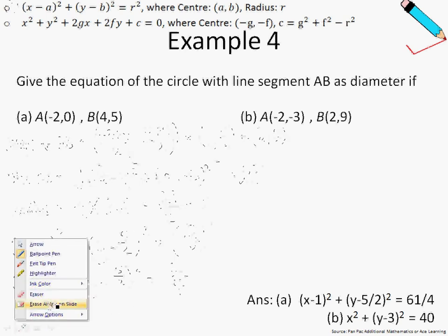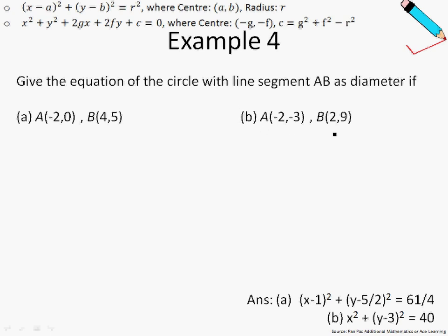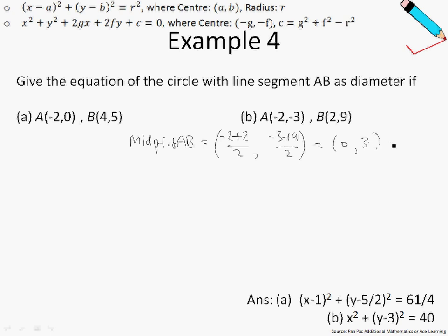Let's move on to look at the next example. In example 4B, this is given to us, so we'll perform the same steps. First let us find the midpoint of AB. The midpoint of AB is just negative 2 plus 2, and this gives me 0 comma 3. This happens to be the center of the circle, which is just A comma B.